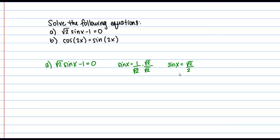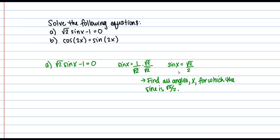So what does it mean for us to solve this equation? We haven't actually isolated X at this point — instead we have sine of X equals root 2 over 2. What we're actually going to do is find all angles for which the sine is root 2 over 2. Hopefully you already know some angles where the sine is root 2 over 2, but just to be sure, let's take a look at the unit circle together.